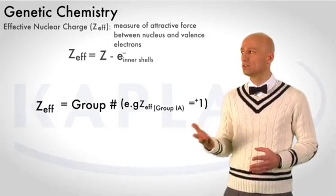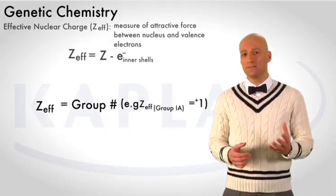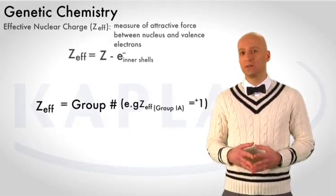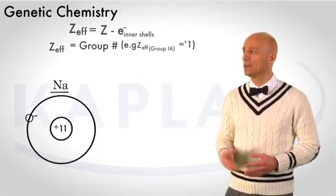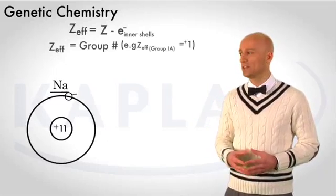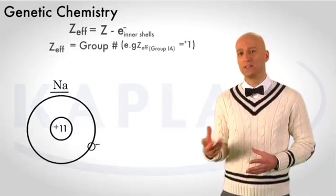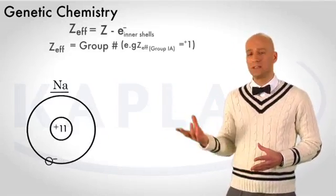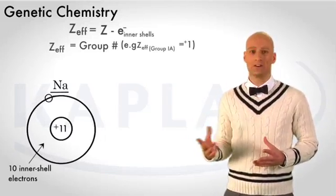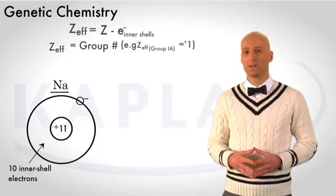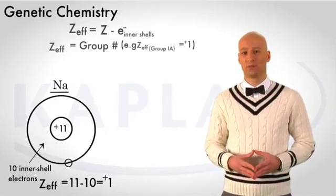For example, in group 1A, sodium, potassium, and so on, the effective nuclear charge is simply equal to plus 1. And we have a model of sodium here for you to look at. In sodium, we have 11 protons in the nucleus, and we have one valence electron, which is indicated by the group number. Sitting between the nucleus and the valence electron are 10 inner shell electrons. And so the calculation of Z-effective would be 11 minus 10 equals plus 1.